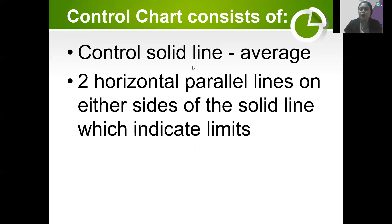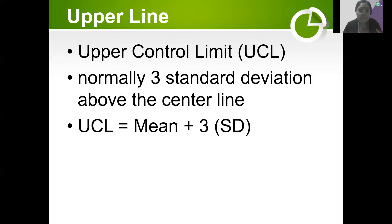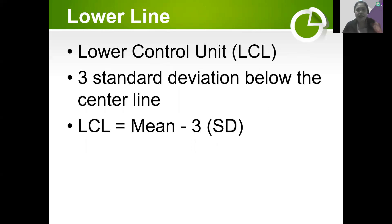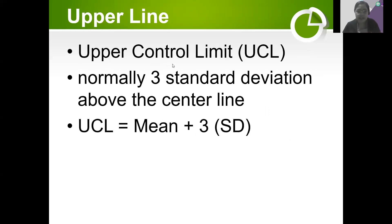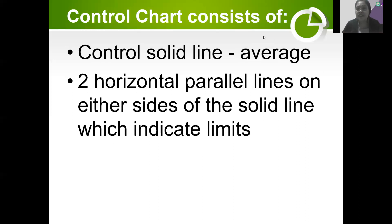We can also make our own control chart. The solid center line represents the mean of the data. We have two horizontal parallel broken lines on each side — the upper control limit, or UCL, and the lower control limit, or LCL. The UCL is 3 standard deviations above the center line: UCL = mean + 3 × SD. The upper line is 3 standard deviations above our center line, and the lower line is 3 standard deviations below. LCL = mean − 3 × SD.